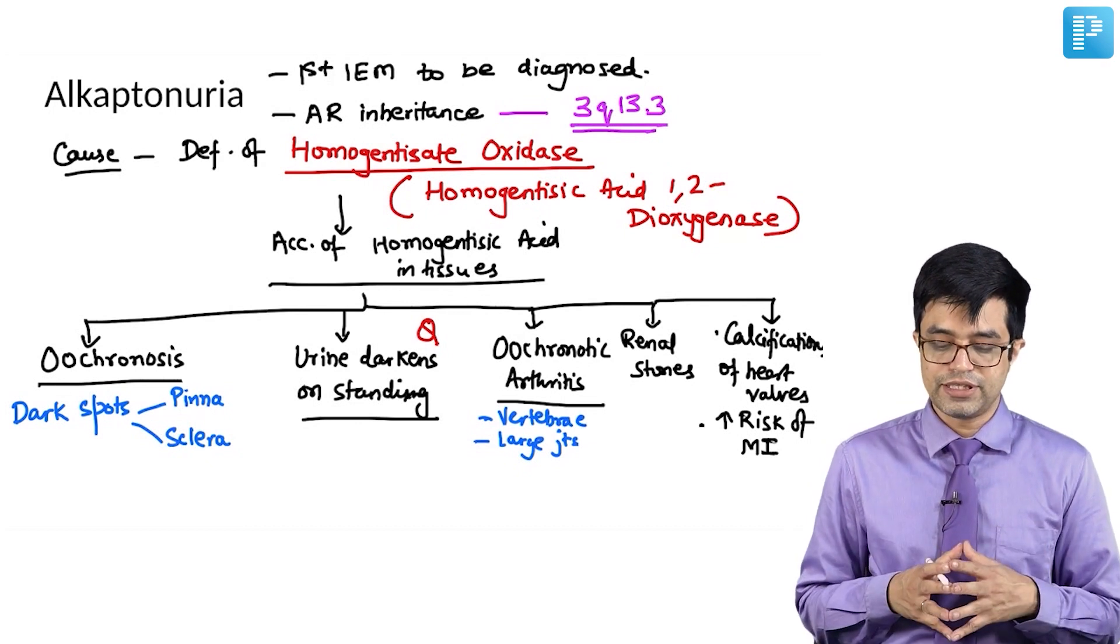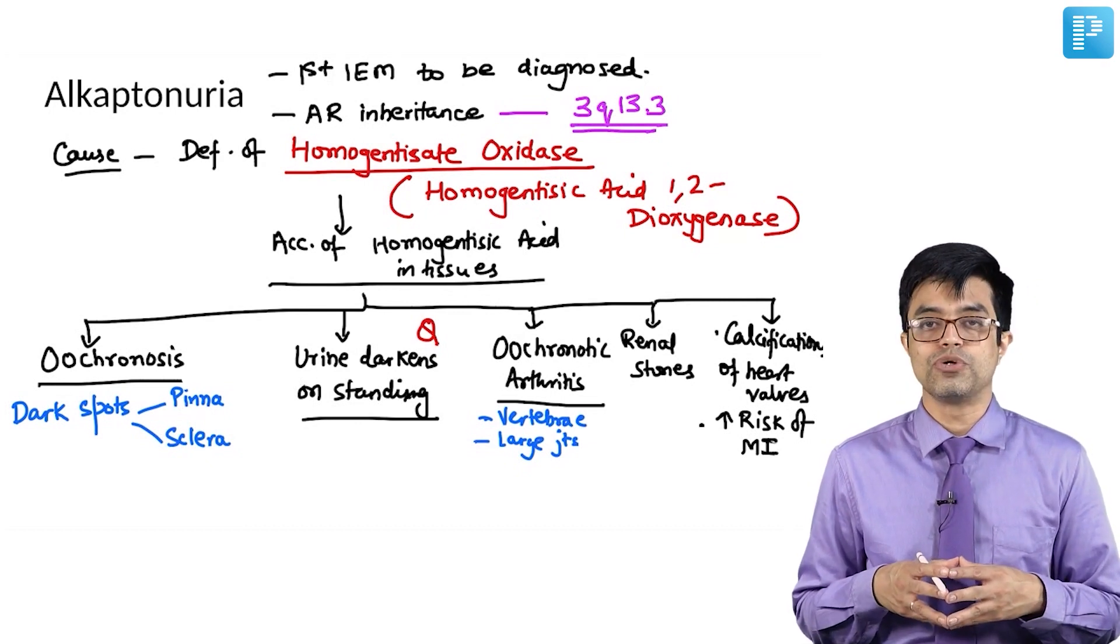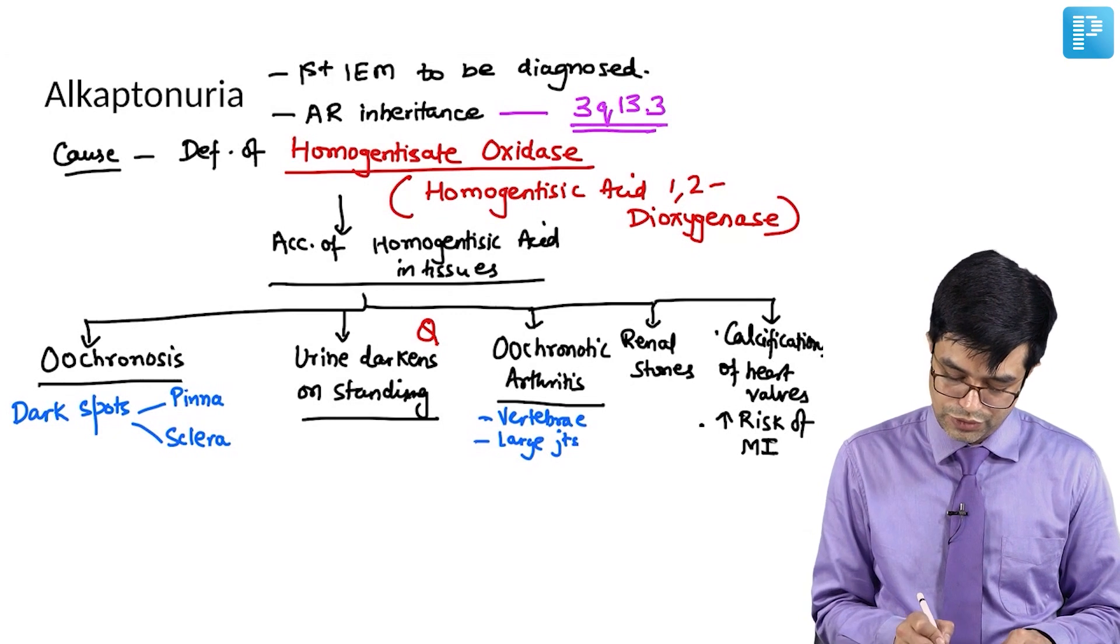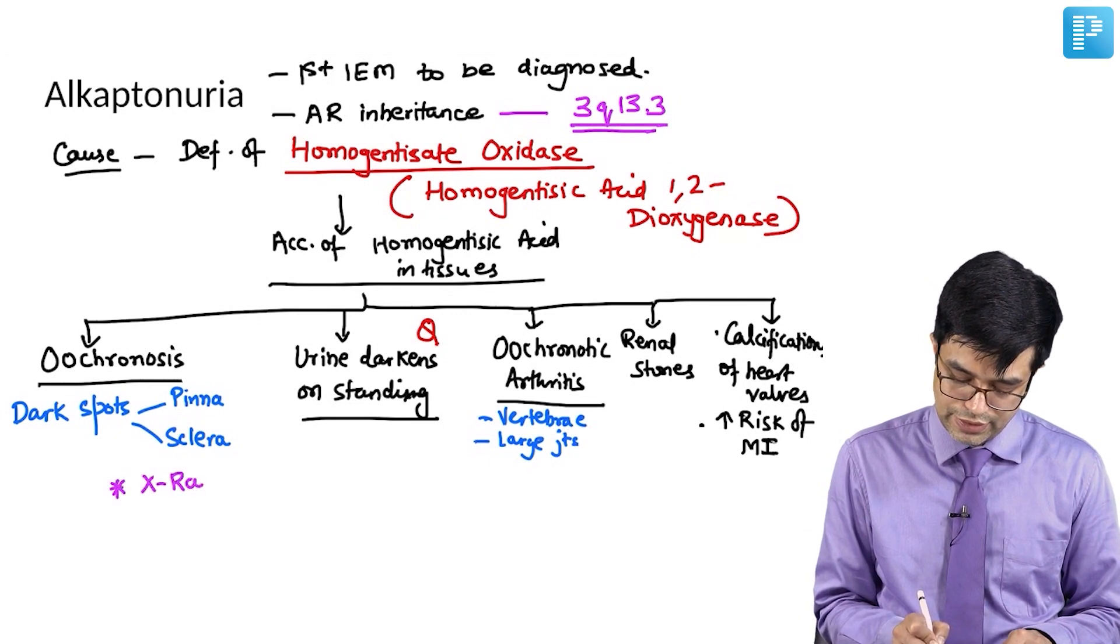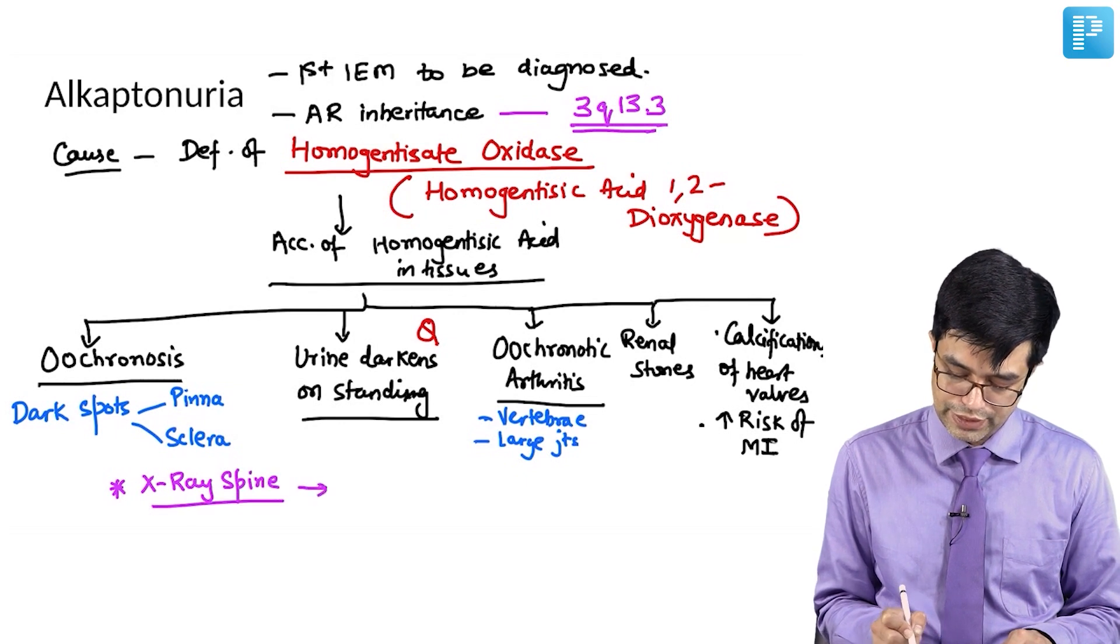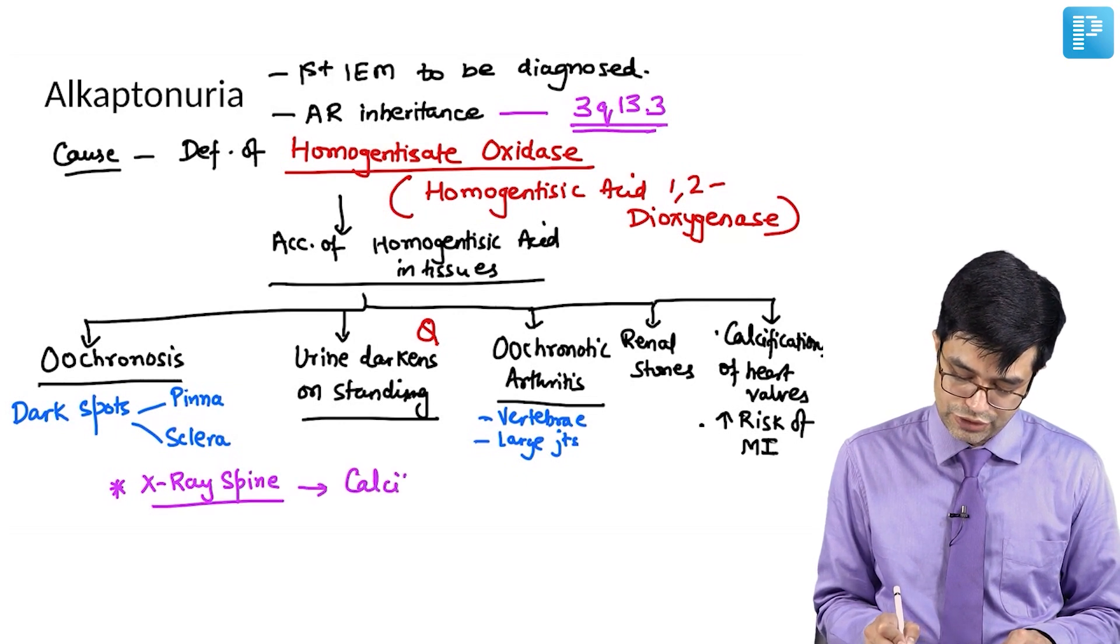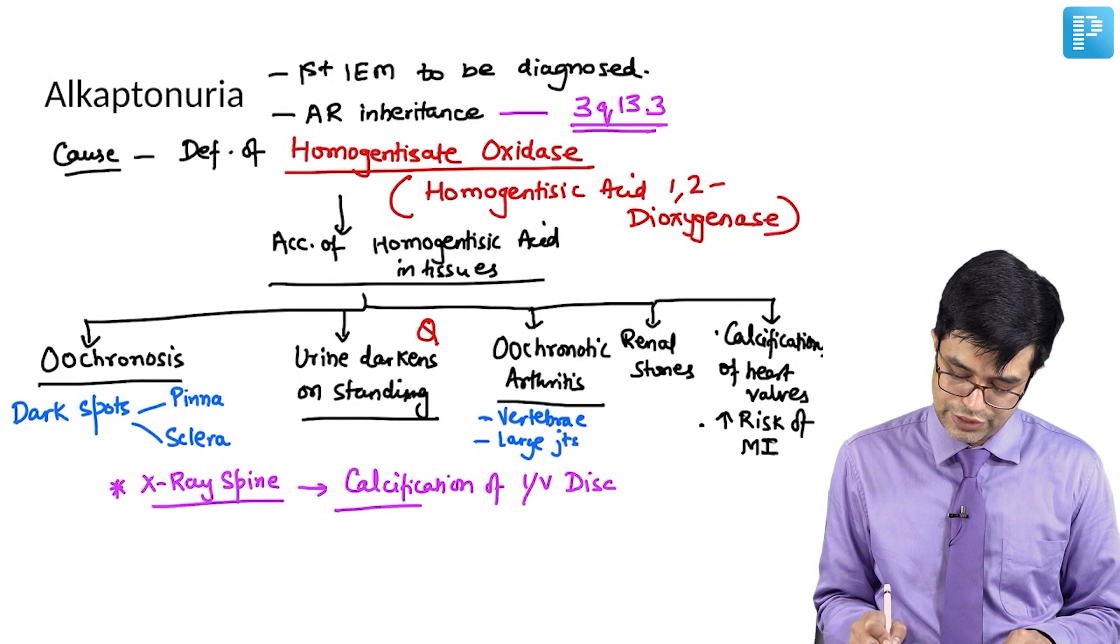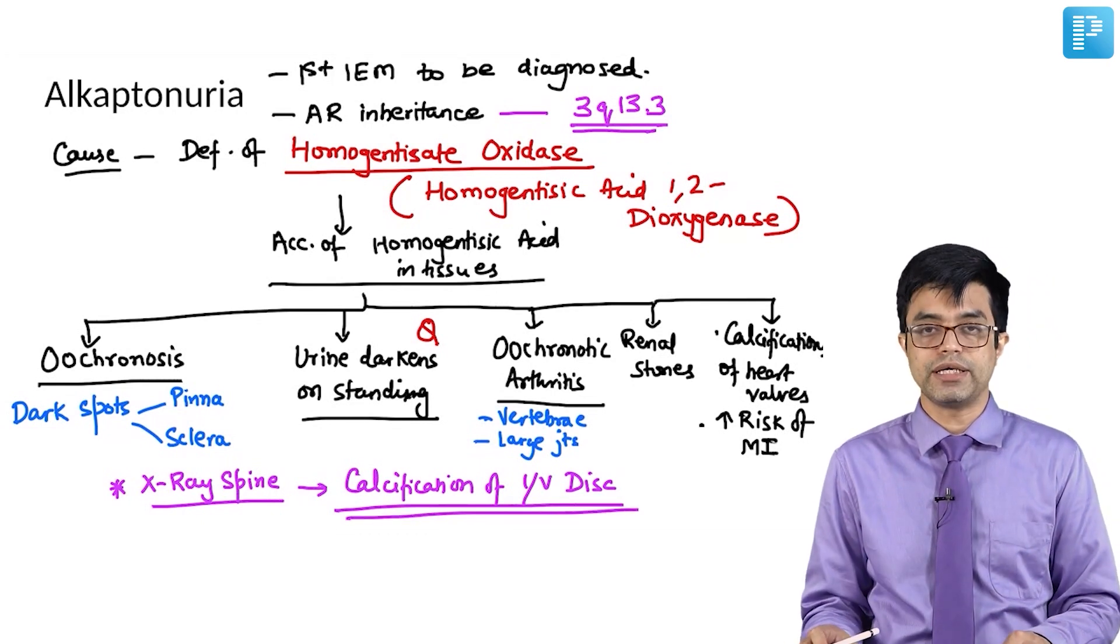These are the manifestations that occur in alkaptonuria. Potential MCQ: if you do x-ray of the spine, what manifestation will you find? You will find calcification of intervertebral disc. Calcification of intervertebral disc will be seen on x-ray spine.